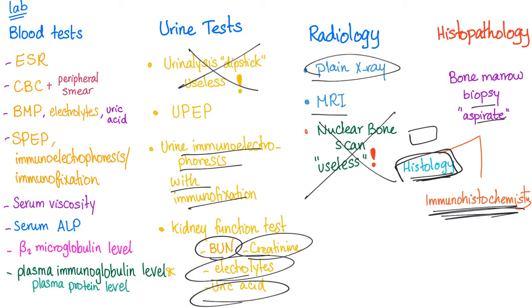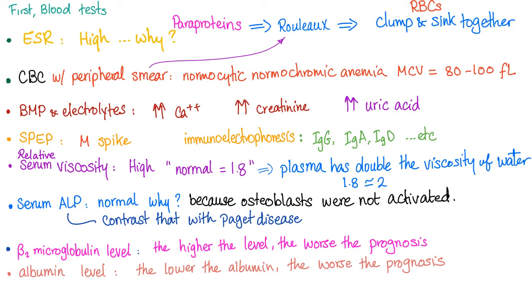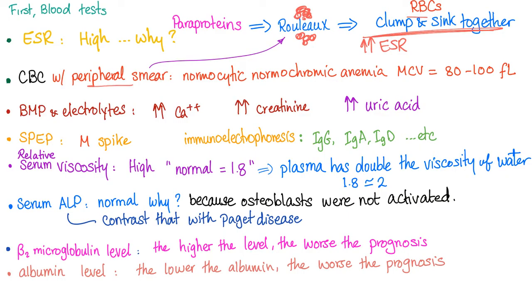Starting with blood tests: ESR is high because paraproteins cause rouleaux formation — red blood cells clump together and sink quickly, leading to increased erythrocyte sedimentation rate. On the peripheral smear you will see rouleaux formation.